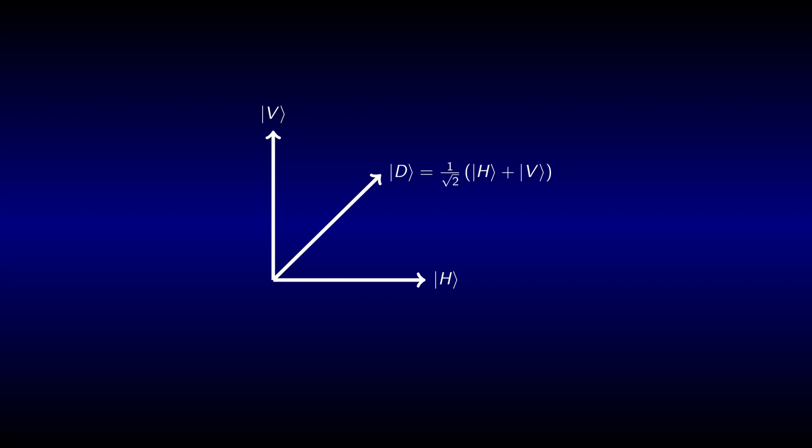With this picture in mind, it is easy to see that the wave function describing diagonal polarization is just the sum of horizontal and vertical wave function multiplied by a normalization factor of 1 over the square root of 2.